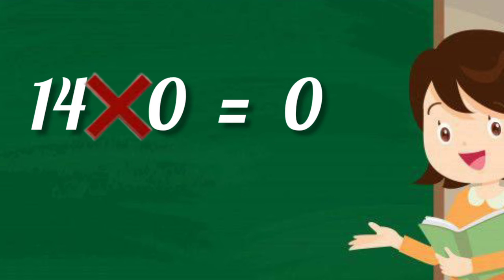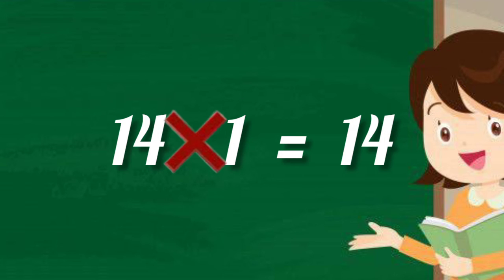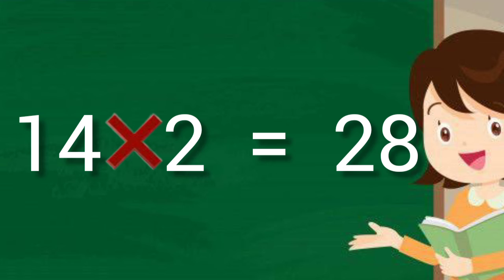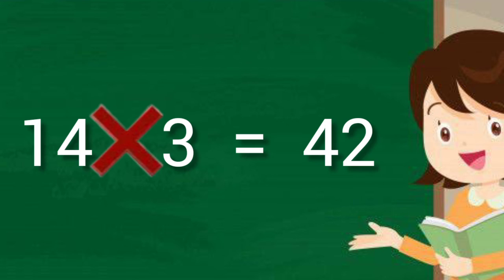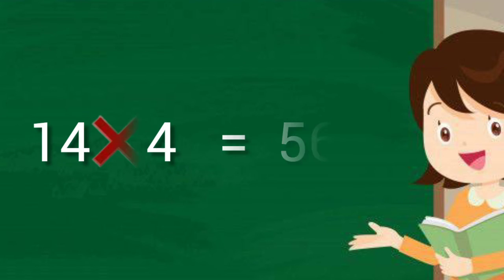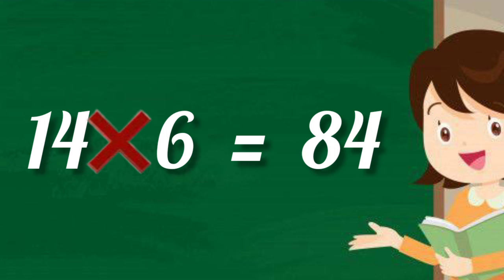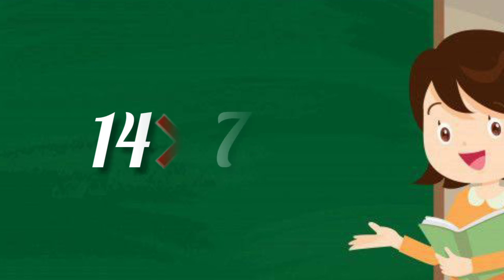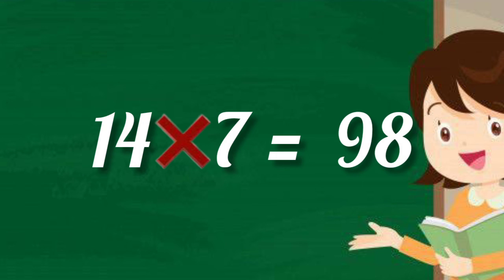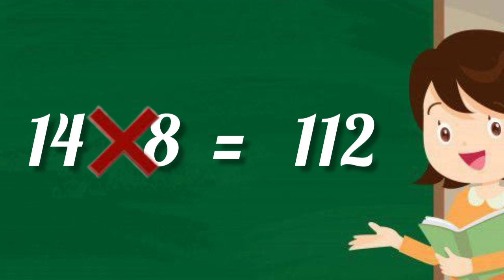14 ones are 14, 14 twos are 28, 14 threes are 42, 14 fours are 56, 14 fives are 70, 14 sixes are 84, 14 sevens are 98, 14 eights are 112.